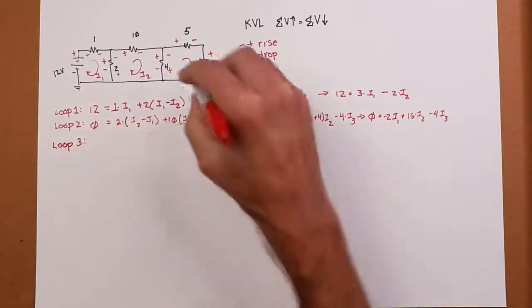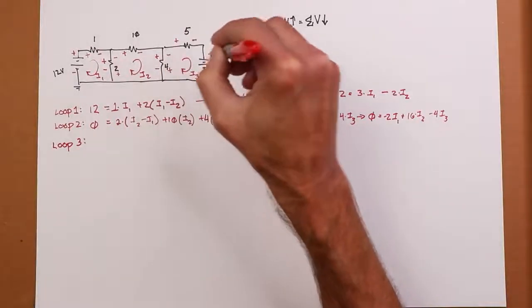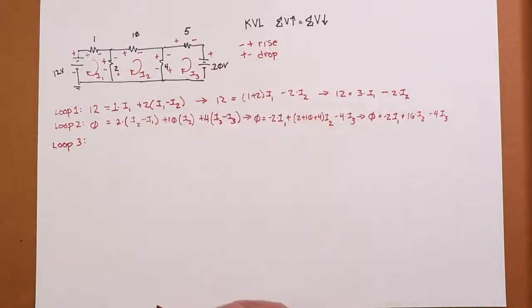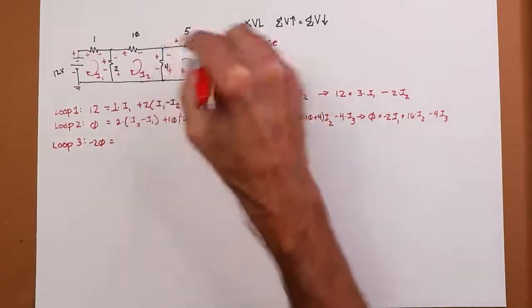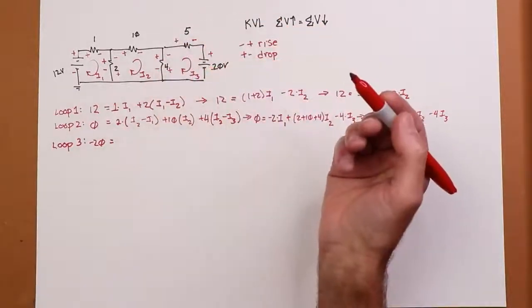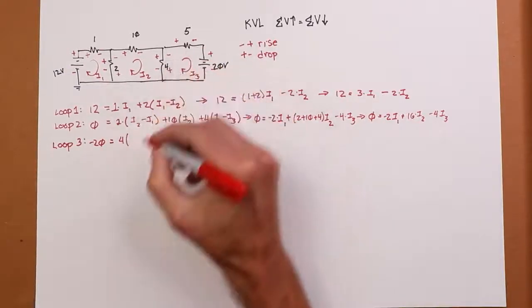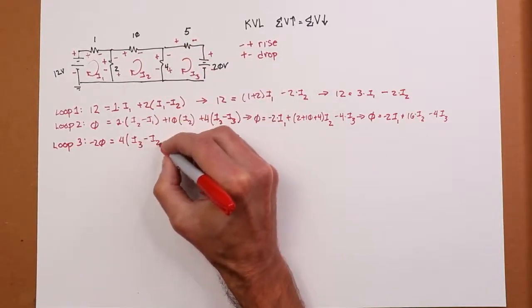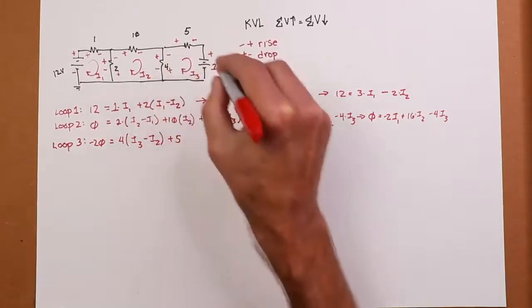Loop 3. This is a little tricky. There's a constant voltage, 20 volts. But notice, given the direction of I3 plus to minus, that shows up as a drop. So, we write that as a negative 20 volts. And then we just do the summation. I've got a drop around the 4 ohm, drop on the 5 ohm. The drop on the 4 ohm is 4 times the current through I3, because that's the loop I'm in. I3 minus I2, which is flowing in the direction opposite. Then we have the 5 ohm times the current through it, which is just I3.